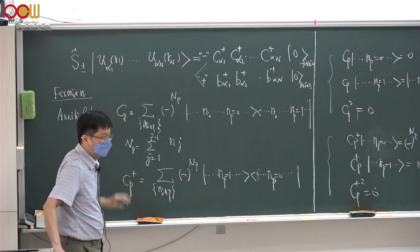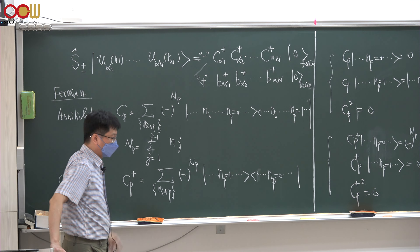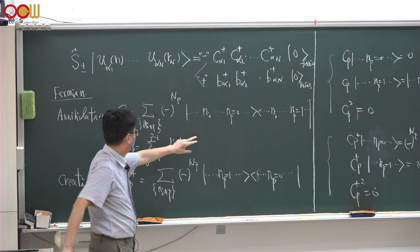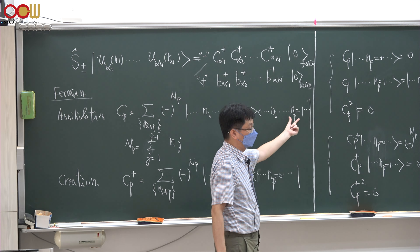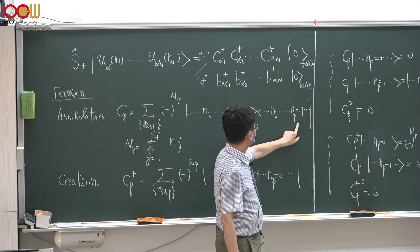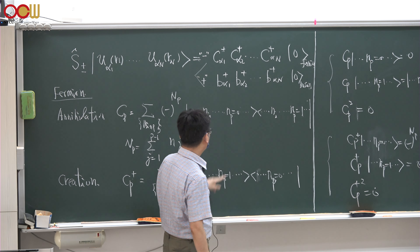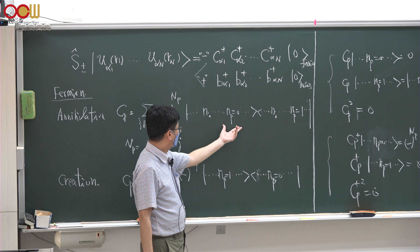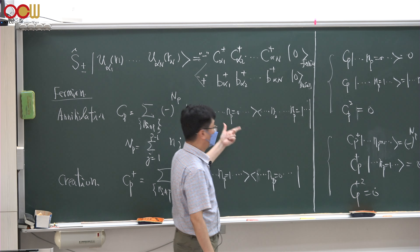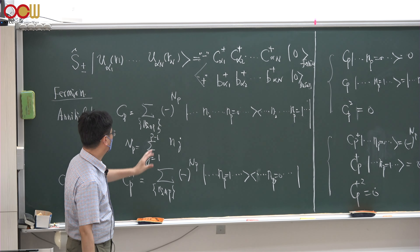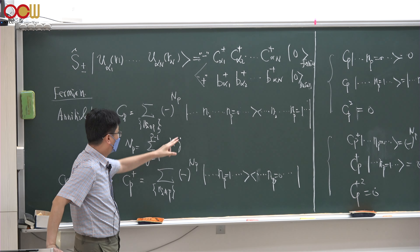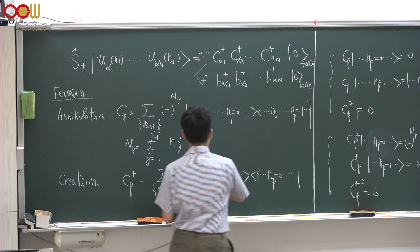Last time, we defined an annihilation operator for a fermion particle. Let me repeat this definition: the initial state is the state where there is a fermion at state p with occupation 1, and the final state is where state p is empty. You destroy that single particle state and multiply minus one to the power of capital M_p, where capital M_p is the sum of all occupations up to state p minus 1.